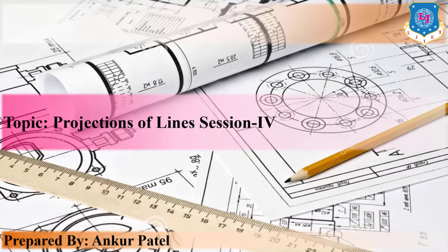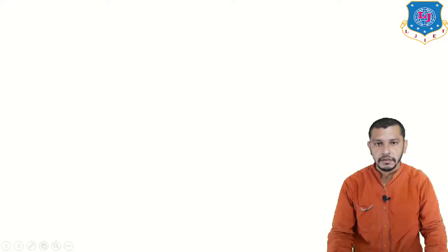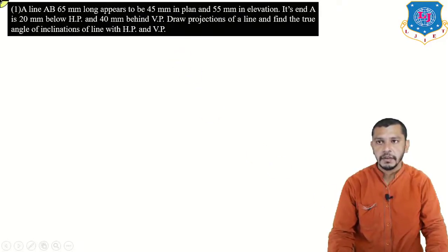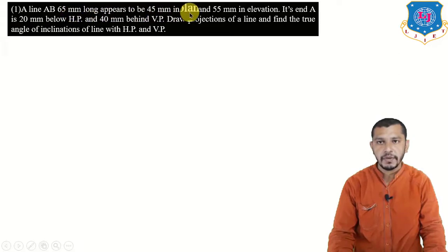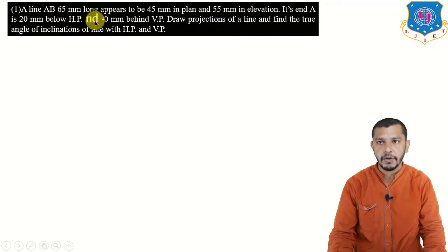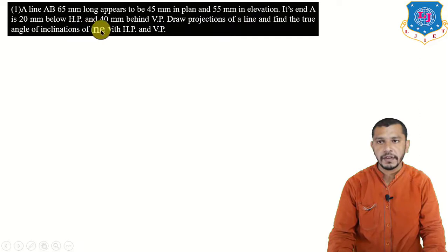Hello everyone, myself Ankur Patel, and today in this fourth session of projection of lines we will continue our practice with problems of projection of lines. Let's start with the first problem: a line AB, 65 mm long, appears to be 45 mm in plan and 55 mm in elevation. End A is 20 mm below HP and 40 mm behind VP. Draw the projection of the line and find the true angle of inclination with HP.